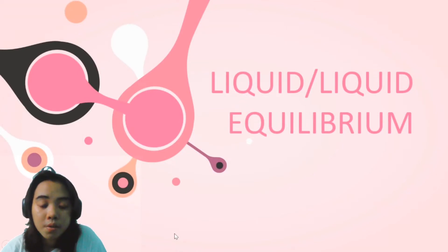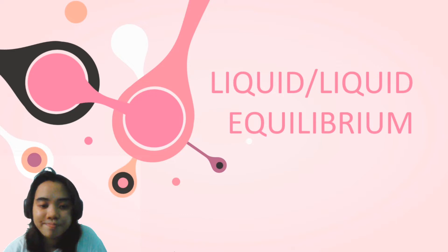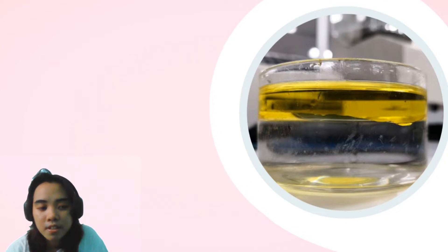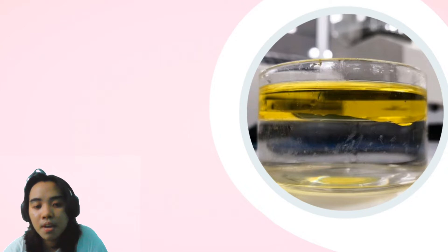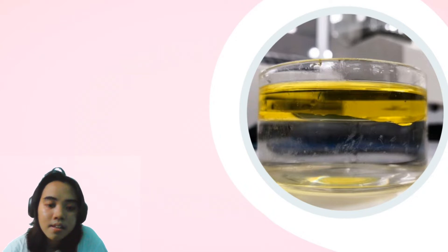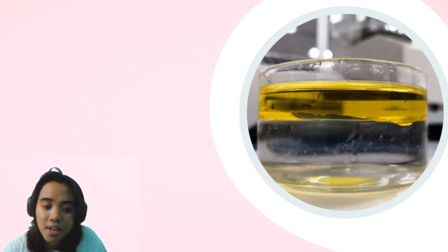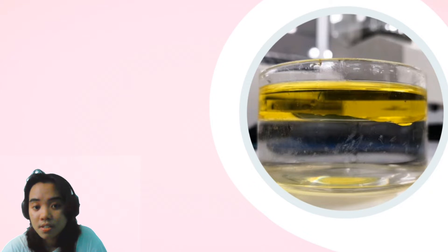Let's talk about liquid-liquid equilibrium. For example, if you have two liquids which are partially miscible with each other and you put them in one container, you'll notice that because they are only partially miscible, they do not totally mix — you will see two phases coexist, which are the phases of the two liquids.